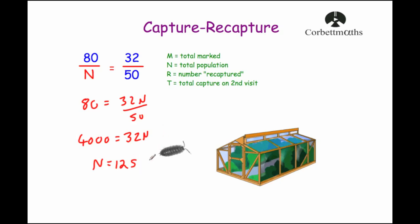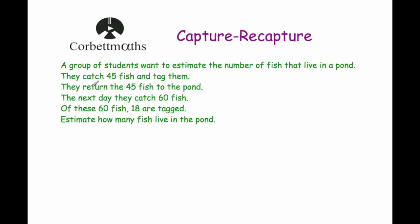Now let's look at a typical exam question. A group of students want to estimate the number of fish that live in a pond. They catch 45 fish and tag them, then return them to the pond. The next day they catch 60 fish, and of those 60 fish, 18 are tagged. Estimate the number of fish that live in the pond. So our formula gives us: 45 over N equals 18 over 60.